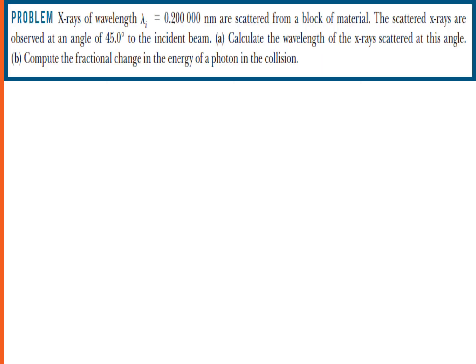Now let us solve a sample problem on the Compton Effect. X-rays of wavelength 0.2 nanometers are scattered from a block of material. The scattered x-rays are observed at an angle of 45 degrees to the incident beam. We are given the initial wavelength equal to 0.2000000 nanometers and the scattering angle equal to 45 degrees.